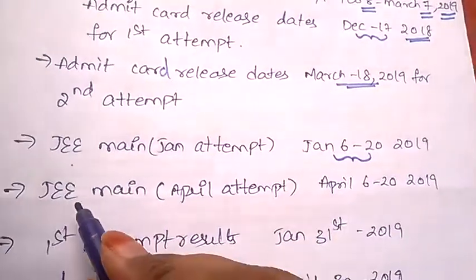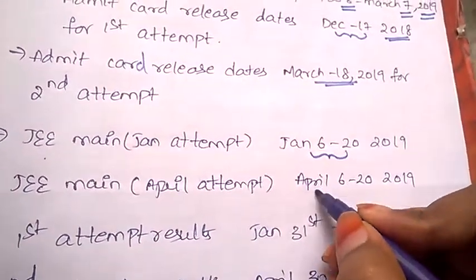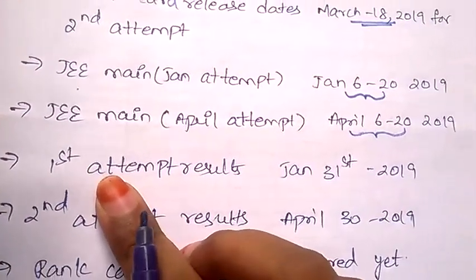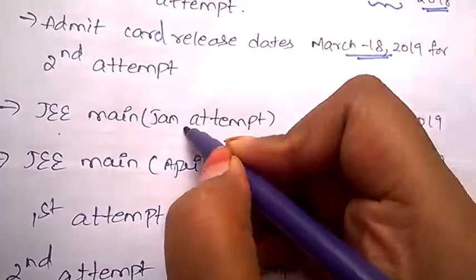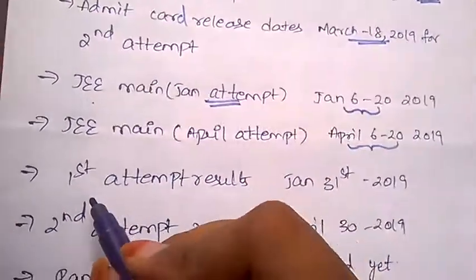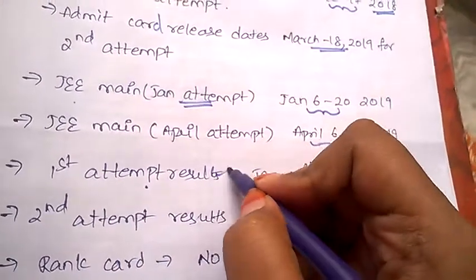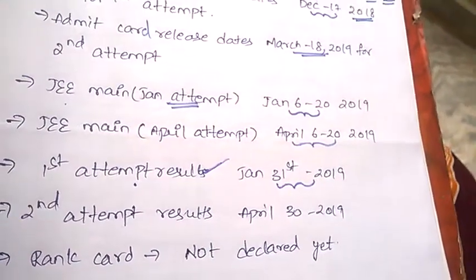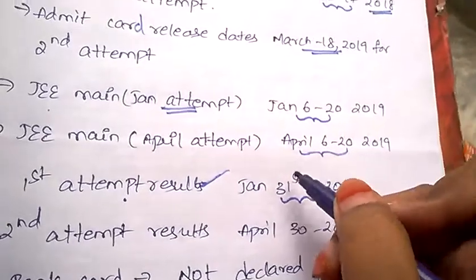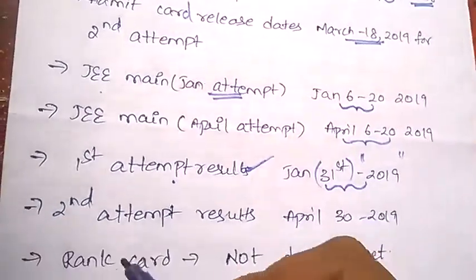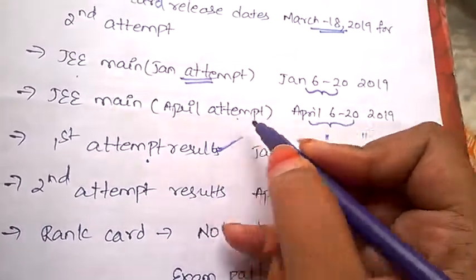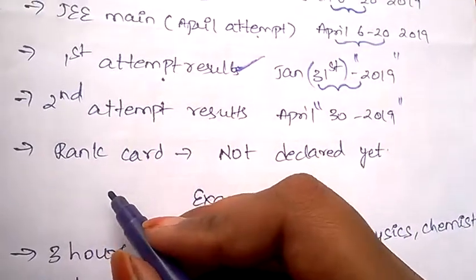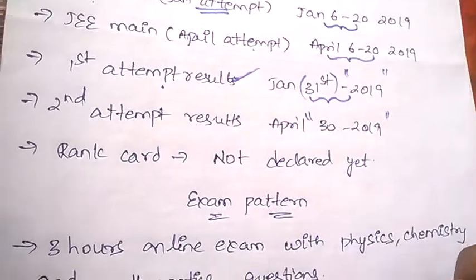Coming to JEE Mains April attempt, the exam date will be between April 6th to 20th of 2019. For the January attempt, the results will be on January 31st of year 2019. The second attempt results, that is the April results, will be on April 30th, 2019. The rank card date is not declared yet.